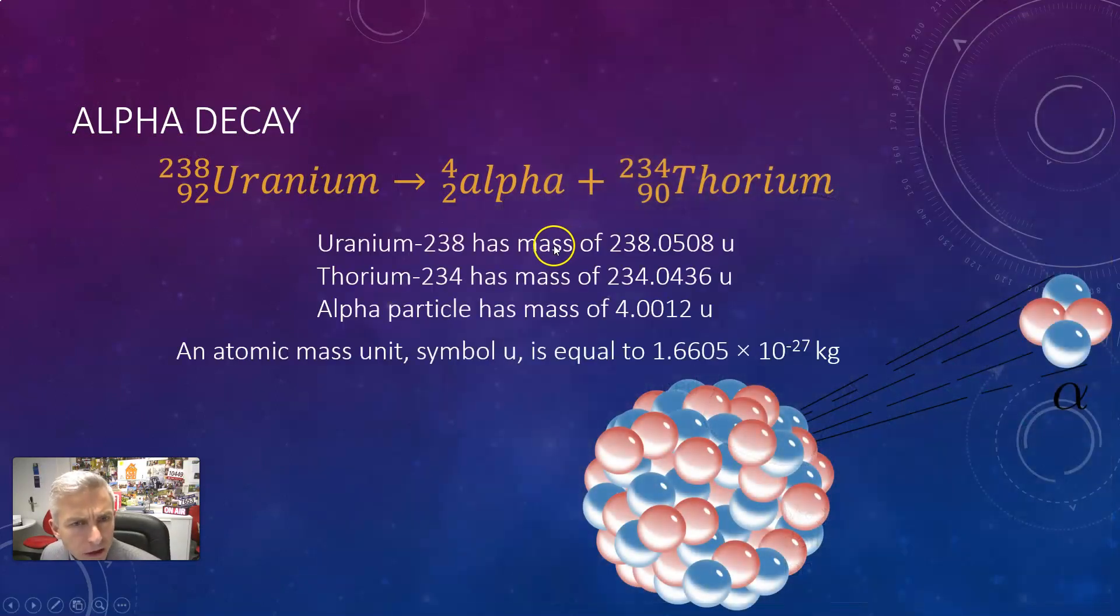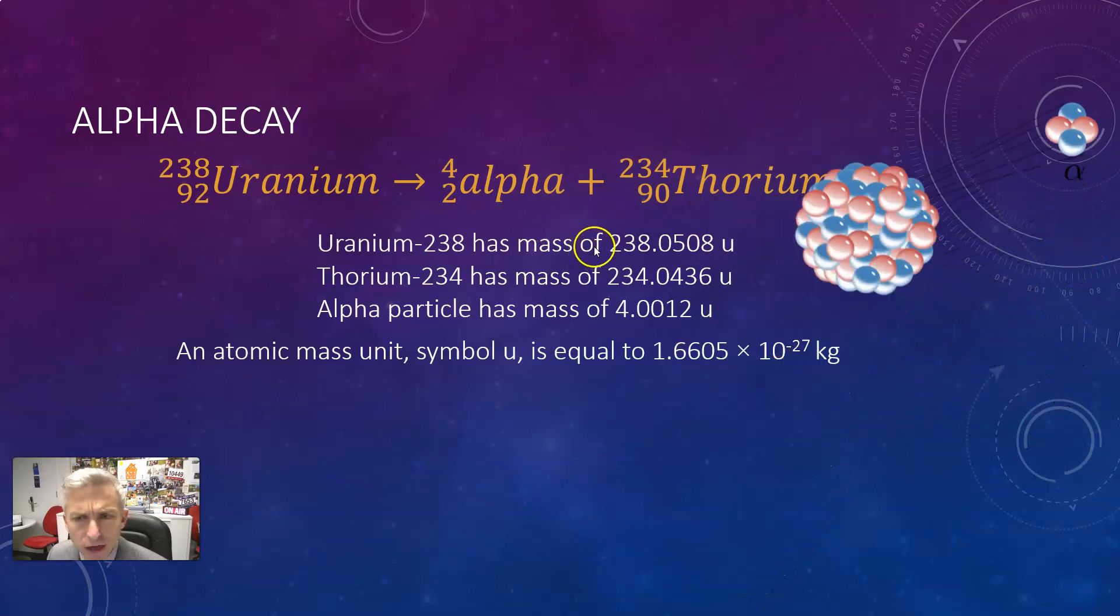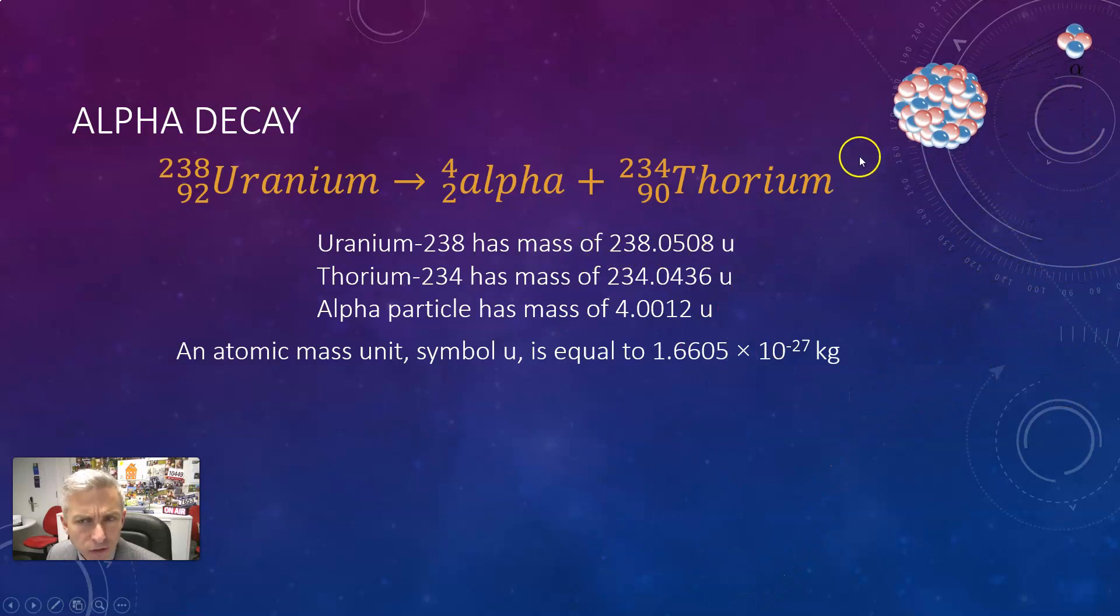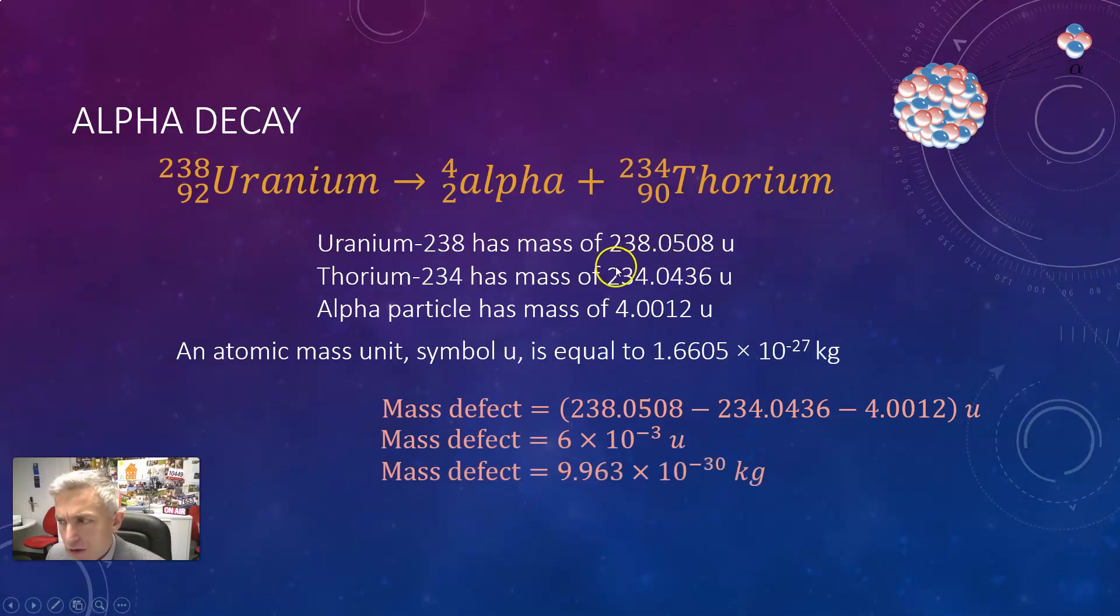So back to this decay equation, we can work out a mass defect and we do that by taking the mass on the left hand side and subtracting the mass on the right hand side. That gives us a mass defect of 6 times 10 to the minus 3 u or atomic mass units which we can convert into kilograms by the conversion factor.